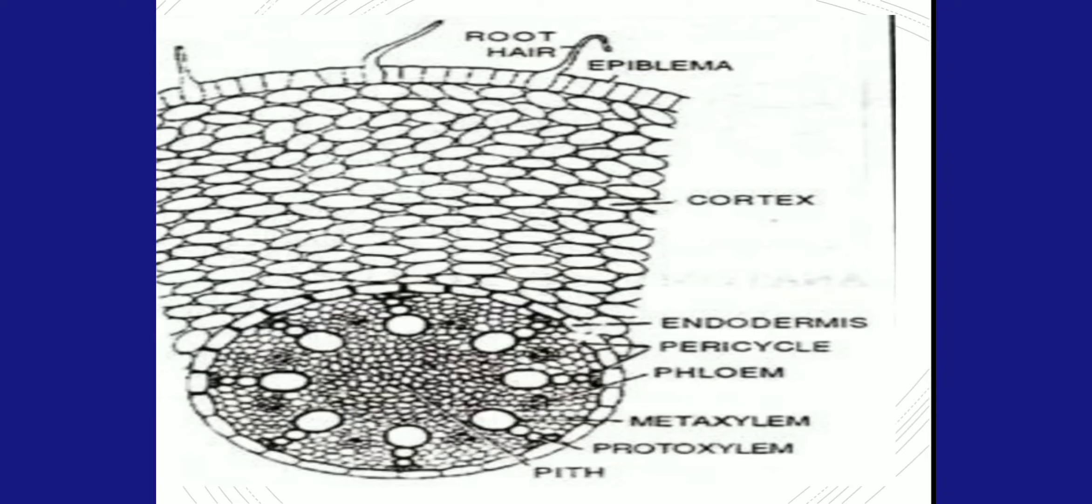The xylem number is more than six, and the pith or medulla region at the center is much larger compared to the dicot root. This is about the anatomy of dicot and monocot roots.